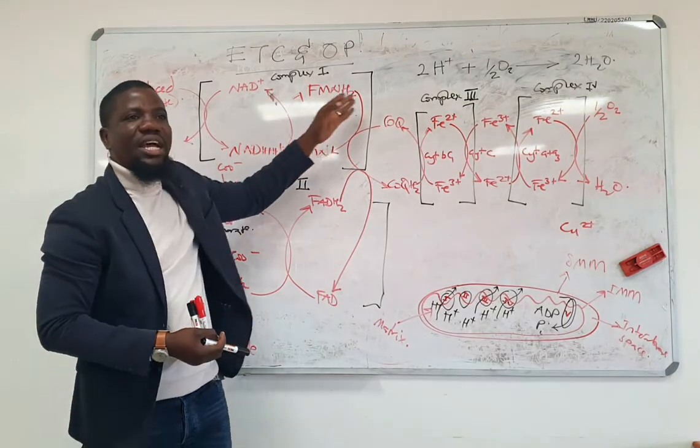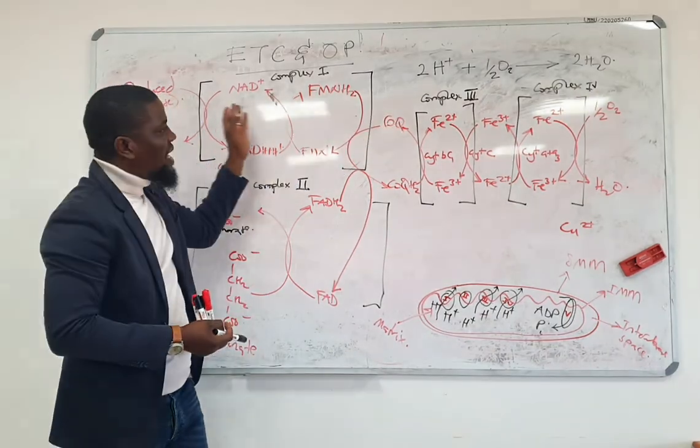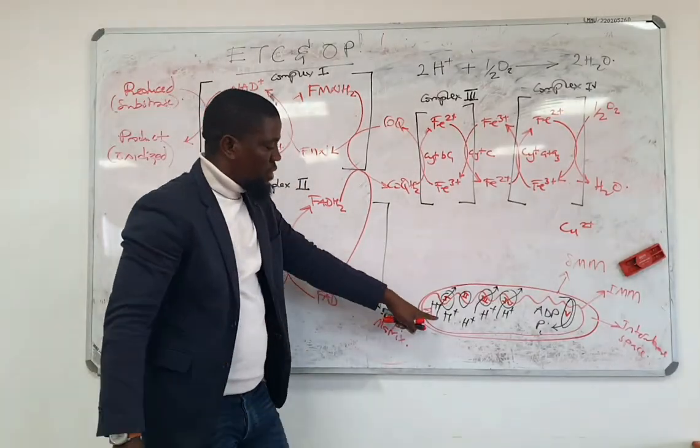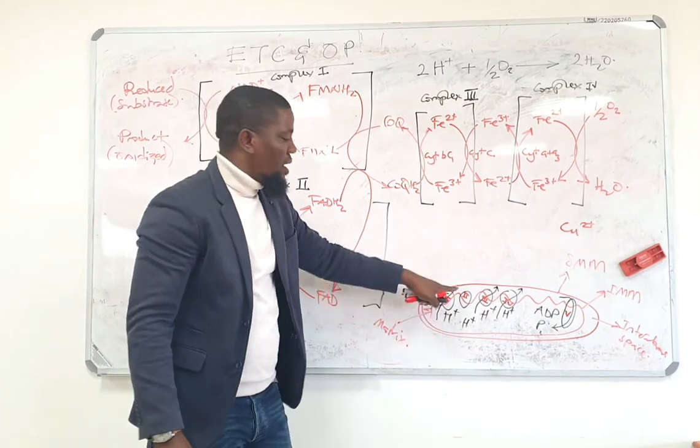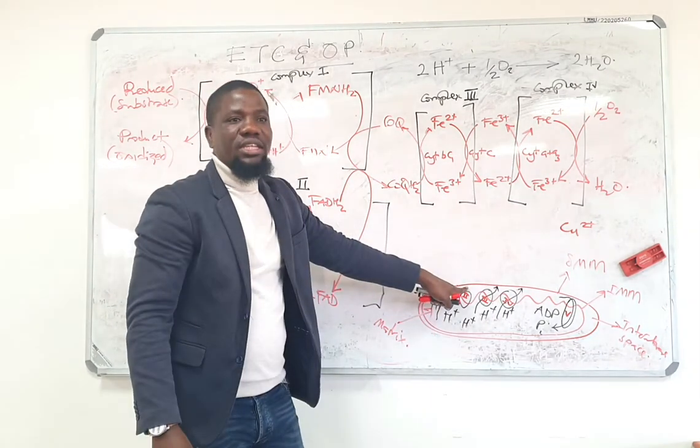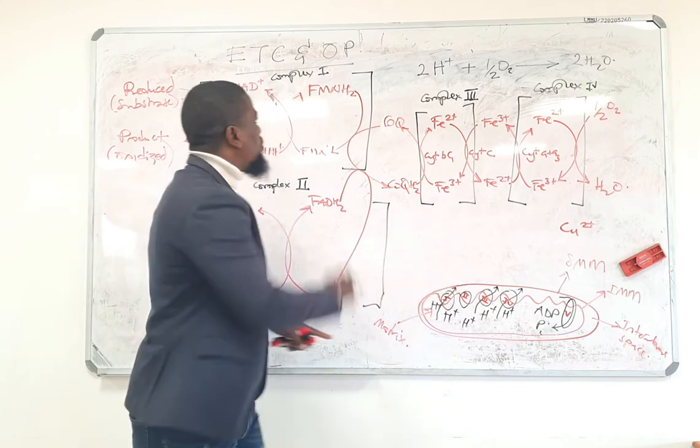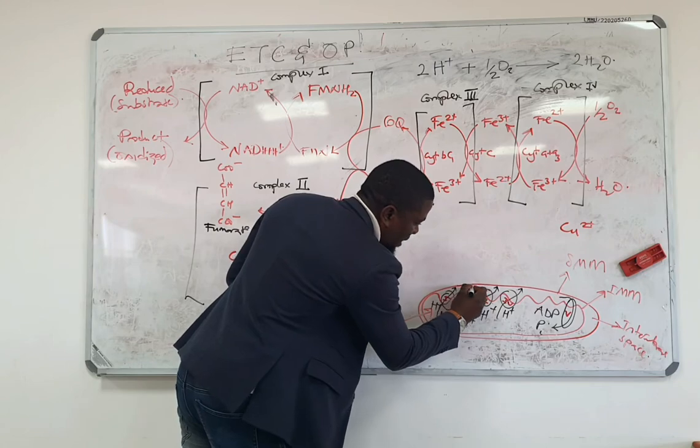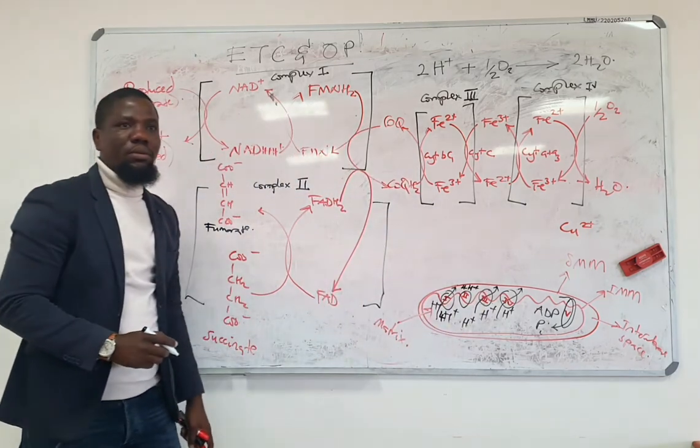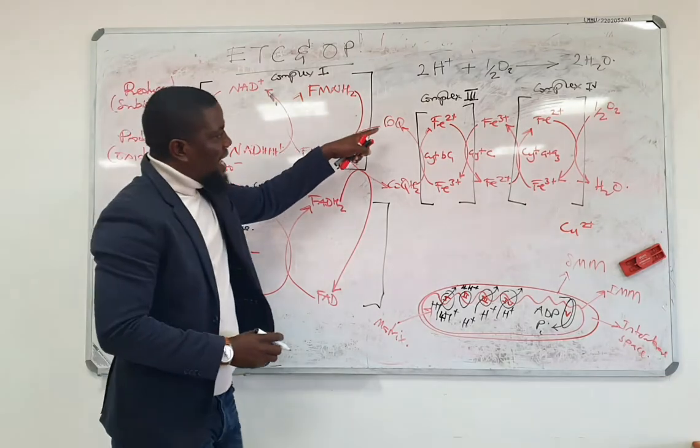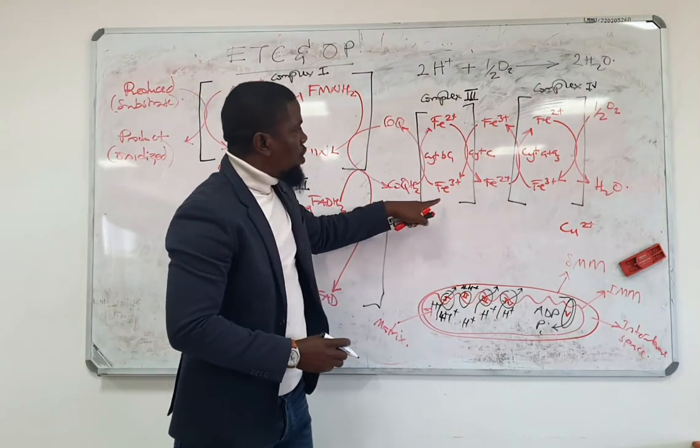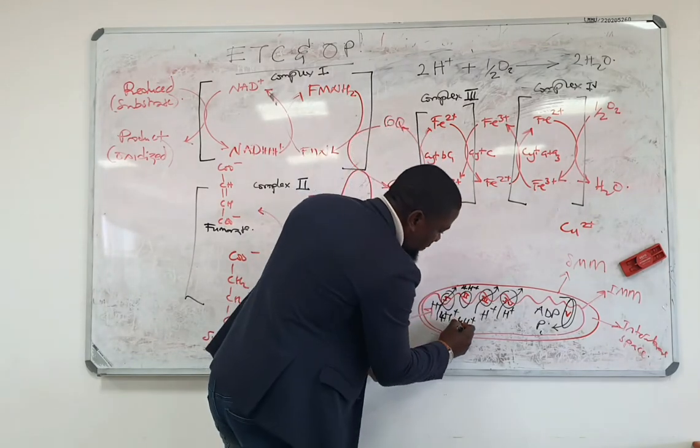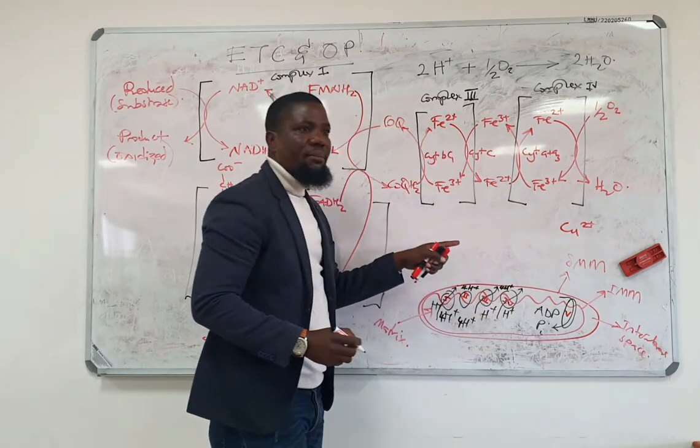This energy is generated because this is a highly passive process. When this energy is generated, it is able to force four protons to move out of the matrix and into the intermembrane space. As they move through complex three, you will see four other protons moving from the matrix into the intermembrane space.